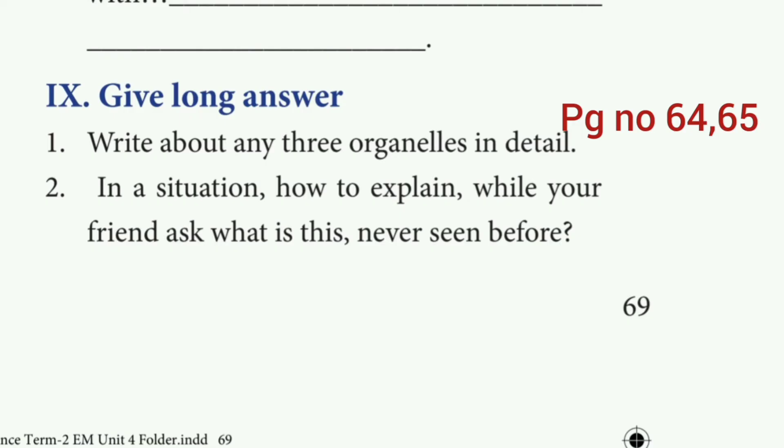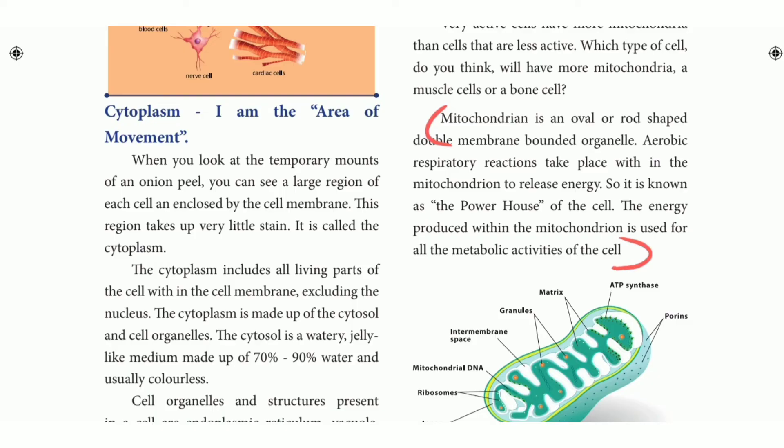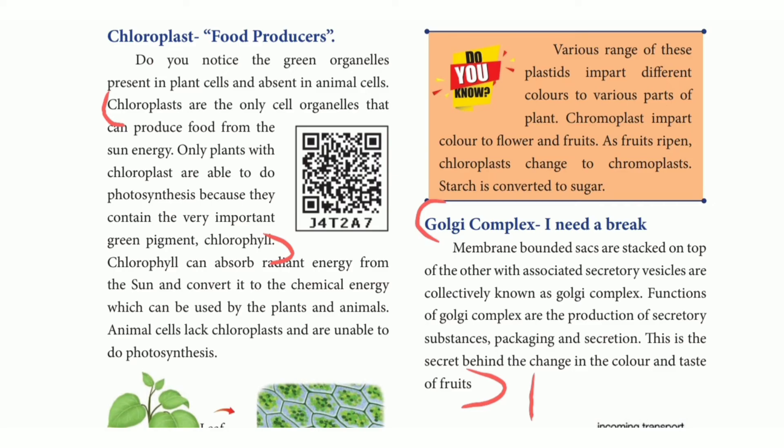Two long answer. First one: Write about any three organelles in detail. Page number 64. Mitochondria and heading, Golgi complex, chloroplast and Golgi complex. Chloroplast third line start, Golgi complex first paragraph. This is the first question. Three organelles: mitochondria, Golgi complex and chloroplast.